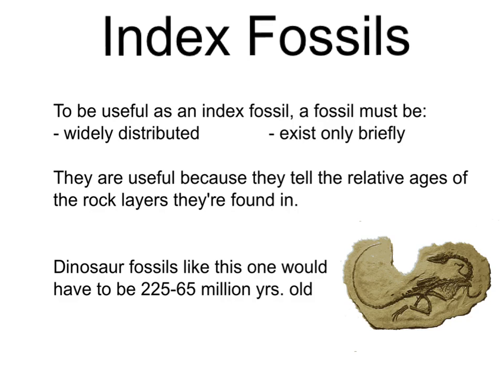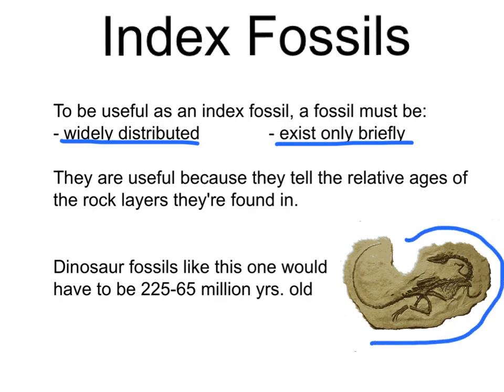Index fossils are also really useful to relatively date rock layers. In order to be an index fossil, you have to meet two criteria: you have to be widely distributed — found in many places all over the world — and you have to have existed for only a short period of time. For example, this is a dinosaur bone fossil. Dinosaur fossil remains have been found in rocks as old as 225 million years ago and as recently as 65 million years ago. So if you find dinosaur bone, you know it has to be between 225 and 65 million years old.